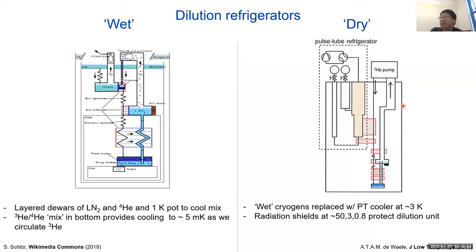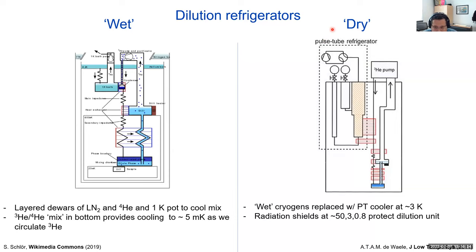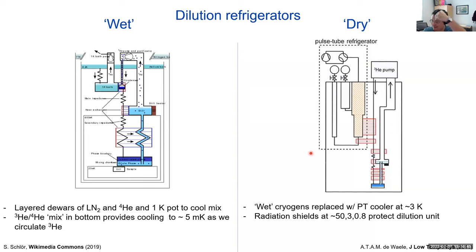Does the vibration of the pulse tube matter to qubit experiments, and how do you reduce vibration coupling? At some level every problem you can imagine is a problem at some level. The world's best qubits are measured in these dry systems, so I'm guessing it's not the limit so far. Cryogenic vibration isolation is stranger still — that's a more advanced topic. Can you explain how a pulse tube works? In the same way that I'm not explaining the dilution unit, it's really nice thermodynamics — but not for today.